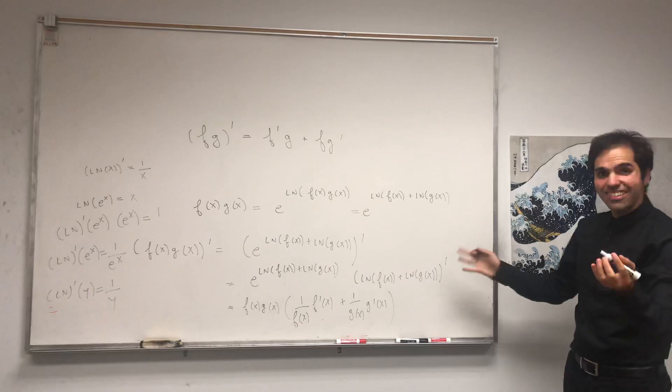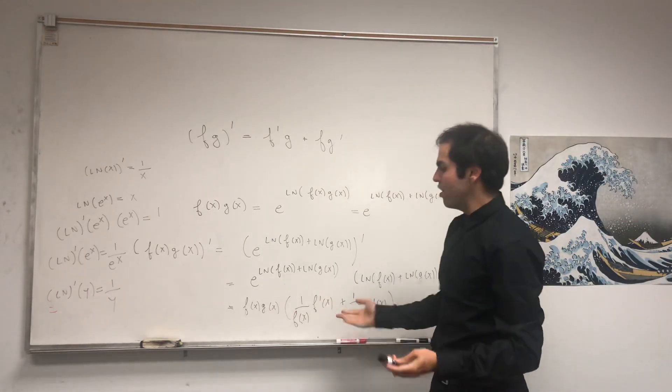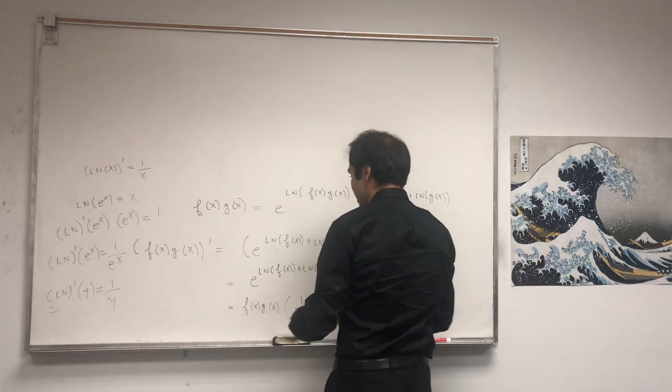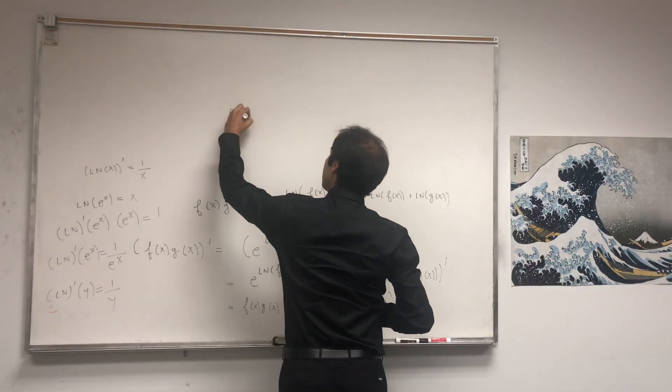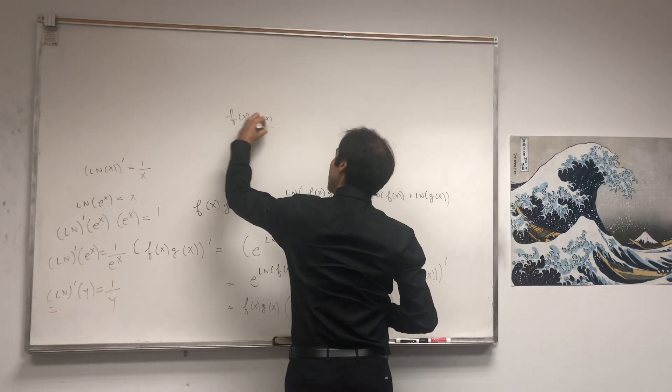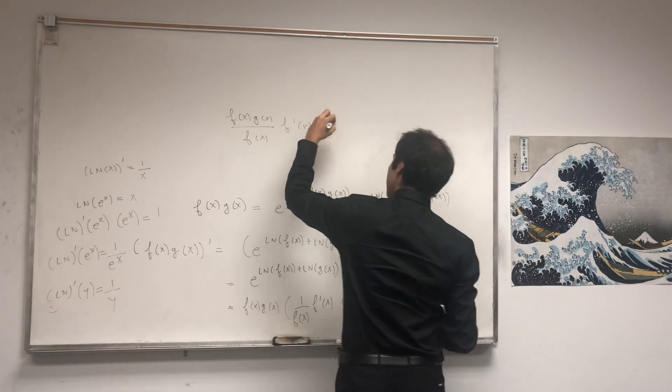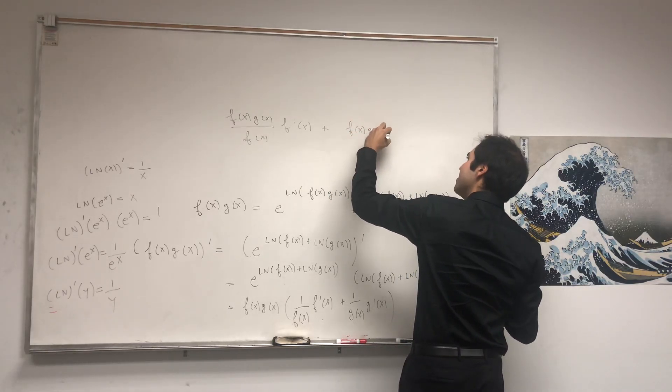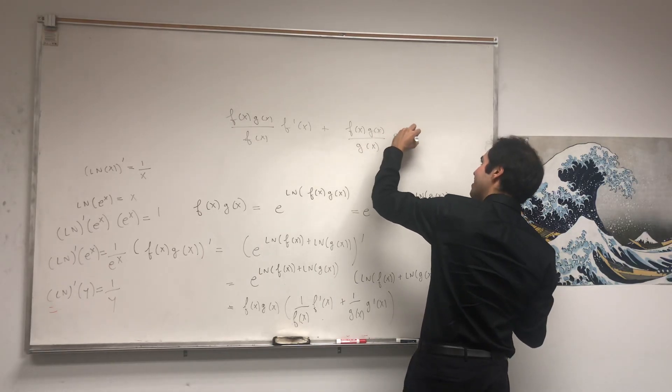All we need to do is a beautiful simplification. We just need to foil this out. In the end, what do we get? f of x, g of x over f of x, f' of x, plus f of x, g of x over g of x, g' of x.